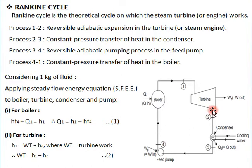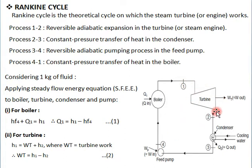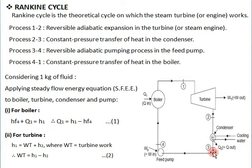Now we look at how thermal power plants work based on the Rankine cycle and derive the efficiency equation. Process 1 to 2 occurs inside the turbine where adiabatic or isentropic expansion takes place and we get work as output. Process 2 to 3 is a constant pressure heat rejection process — inside the condenser, steam is converted into water, so a phase change takes place.